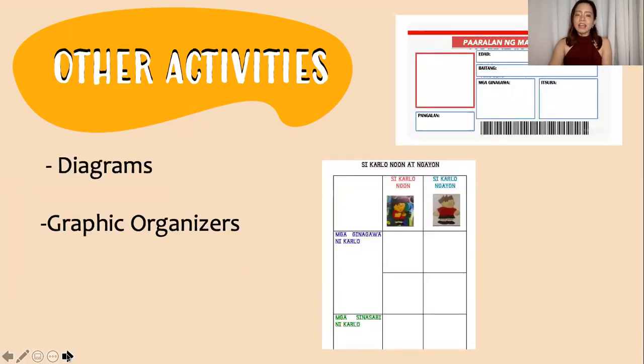Also, diagrams and graphic organizers like these. So, in the first picture, I want to have a glimpse of interpreting the character or the main character in our story. So, I have twisted it. So, I used an ID because our main character is a student in the story. So, another one is through the noon at ngayon comparison of the previous and effect of a specific event in the story. By this, you could recall events and experiences. You could also make inferencing and also narrating.